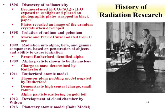A couple years after the discovery of radioactivity, in 1898, the Curies isolated radium and polonium from uranium ore — daughters of uranium as it decays down to lead. Then in 1899, radiation was described as having alpha, beta, and gamma components, based on their penetration of materials and ability to cause ionization.